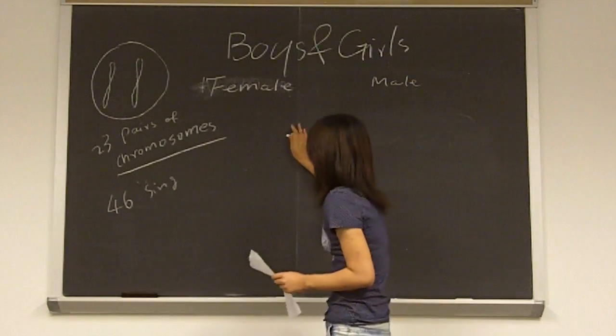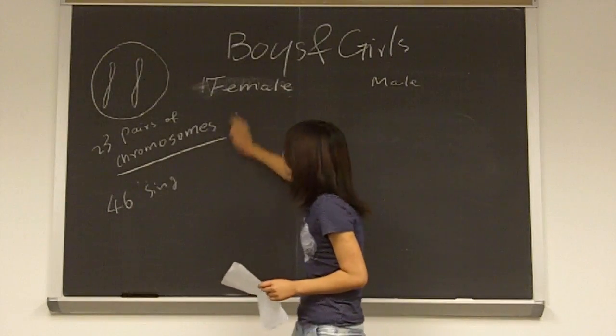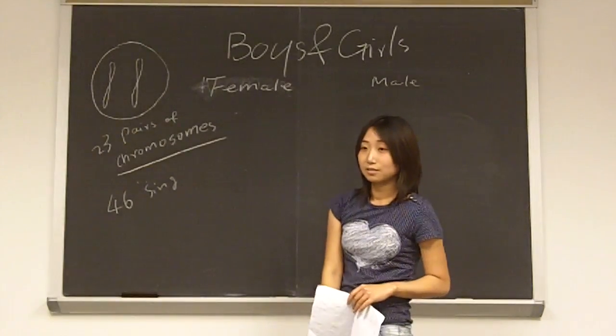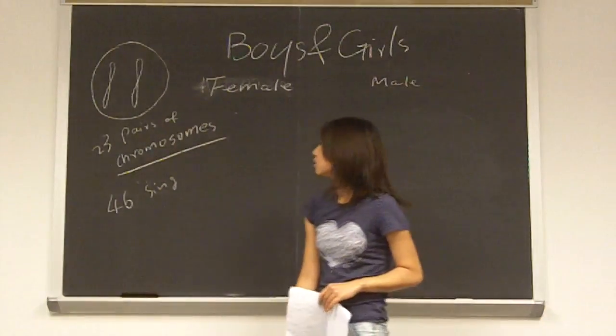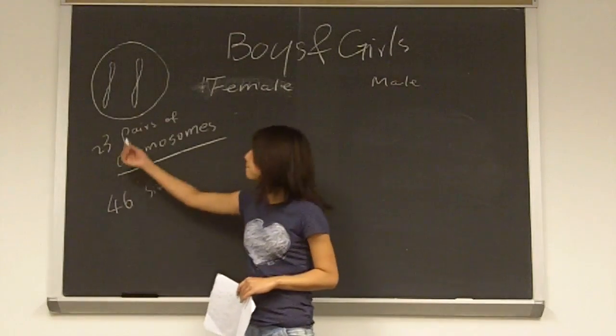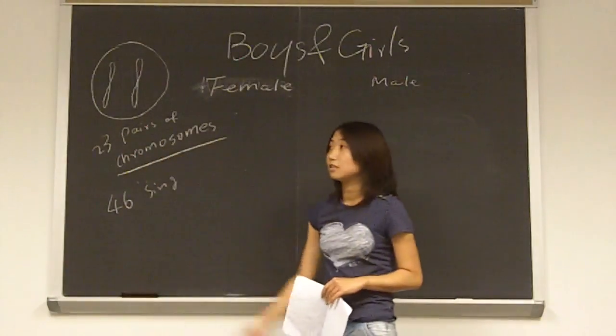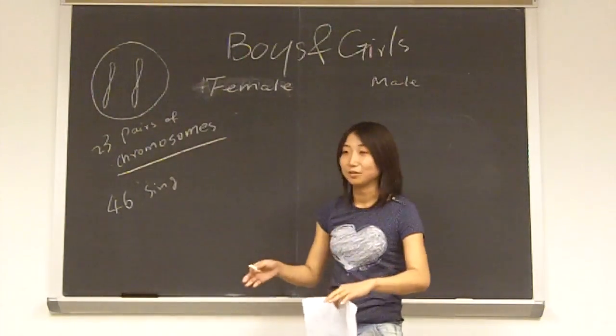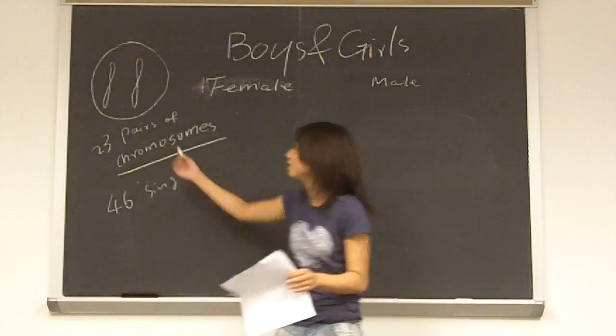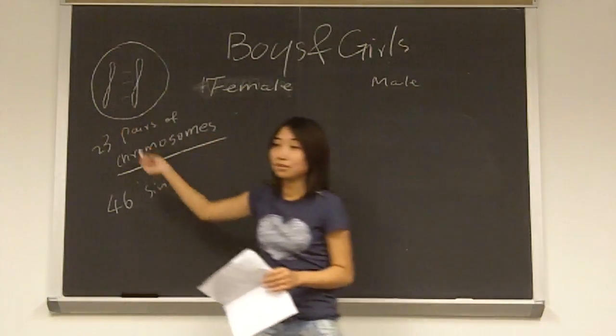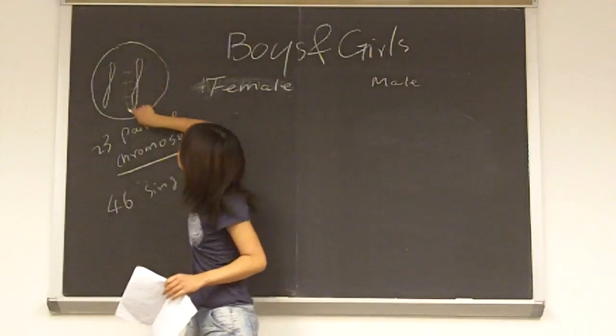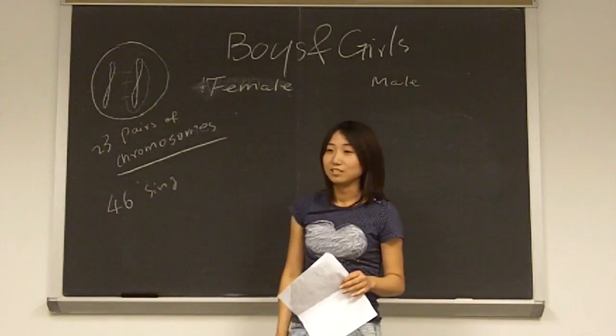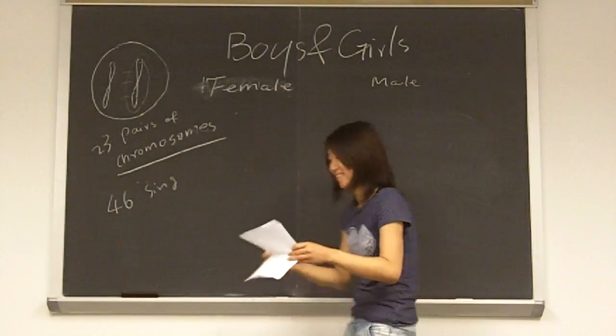So for the 22 pairs of chromosomes... I have a question, are chromosome pairs the same or different? They are sister chromosomes. They contain the same kind of information and they get paired to each other. If you have something wrong about this one, you will get disease or something like that.